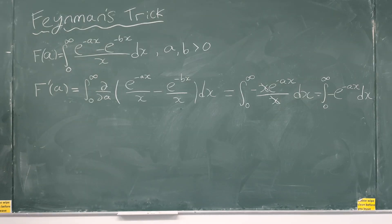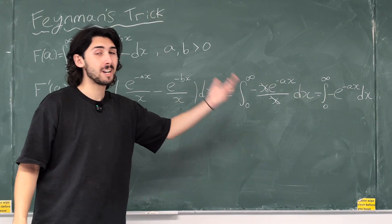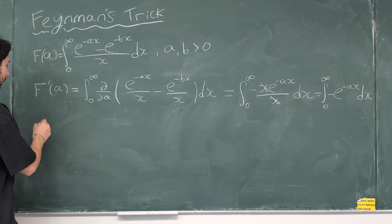Just about have room here to squeeze it in. Cancel the x's out, boom, boom. And we just have minus e to the minus ax dx, like that. Now, as you can see, this is a much, much, much simpler integral. So, let's compute this integral.